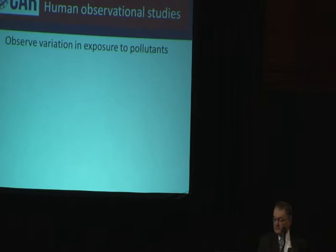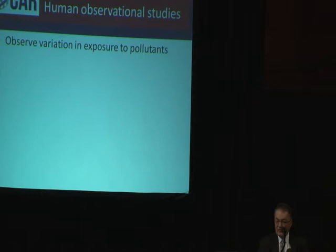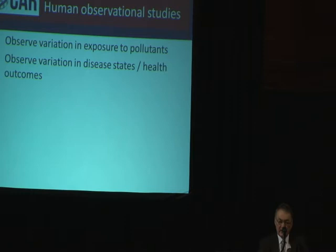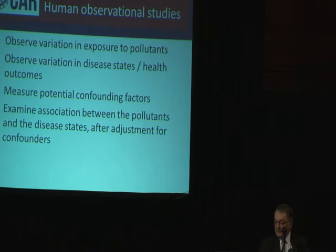A large part of the evidence we use for determining exposure-response relationships and deciding what the health effects of air quality are on humans comes from human observational studies — studies in which we observe, without manipulating or controlling, the actual variation in exposure to pollutants and the variation in disease states or health outcomes. We measure potential confounding factors such as smoking, age, sex, socioeconomic status, household environments, and other things that might confound the relationship between the pollutant and the health outcome.